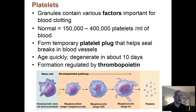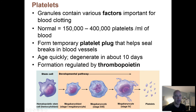Some of those hemocytoblasts become myeloid stem cells, and some of your myeloid stem cells become megakaryoblasts. These are committed cells that will now only proceed down the pathway to becoming platelets — they're not going to become any other type of formed element in the blood — and then these go through a couple of additional changes.